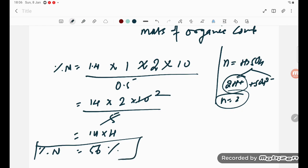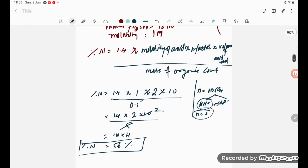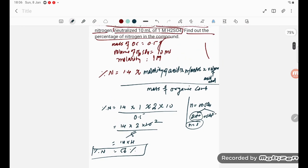Percentage nitrogen equals 56%. This is the required answer. I hope it will be easy for you to understand. Thank you.